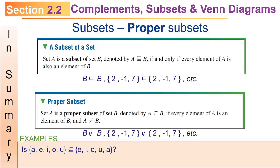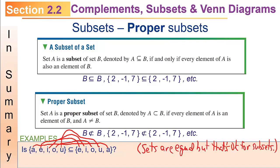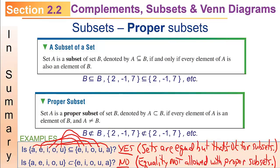Let's do examples. Is {A, E, I, O, U} a subset of {E, I, O, U, A}? Remember, in sets order doesn't matter. A on the left reappears on the right, E on the left reappears on the right, same for I, O, and U. So that is true. Is {A, E, I, O, U} a proper subset of {E, I, O, U, A}? Those are the same two sets, and for a proper subset you can't have equality, so that is automatically no — it is not a proper subset.